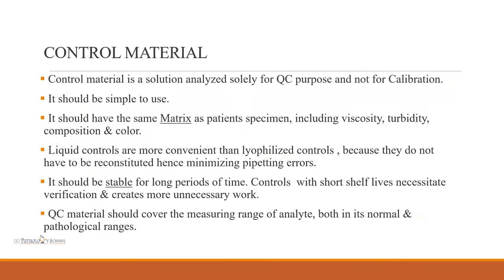A control material is a solution analyzed solely for the purpose of QC and not for calibration. Ideal control material should have the same matrix as the patient's specimen, including viscosity, turbidity, composition, and color. Liquid controls are more convenient than lyophilized controls because they do not need to be reconstituted, minimizing pipetting errors. It should be stable for long periods — controls with shorter shelf life increase unnecessary work. QC material should cover both normal and pathological ranges of the analyte.